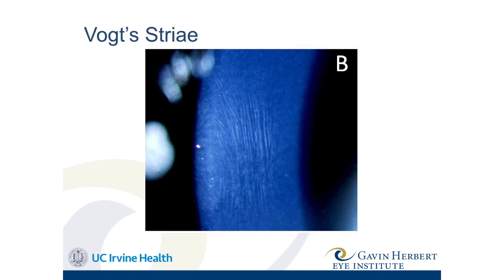When looking through the slit lamp, one thing we look for are Vogt's striae — vertical lines in the cornea. These are tension lines in some of the fibrils or lamellae because of the bulging. Interestingly, if you touch the cornea and push on it, these lines disappear, and when you release, they come back.